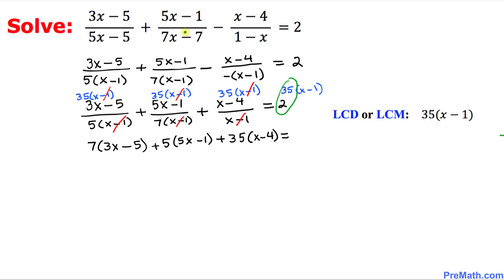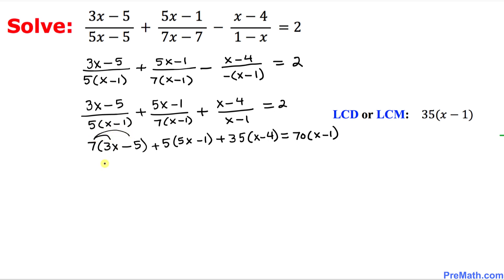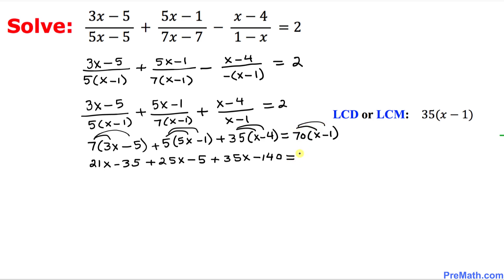On the right-hand side, multiplying 2 times 35 becomes 70, so this becomes 70 times x minus 1. Now let's distribute: 7 into 3x minus 5 gives 21x minus 35. Distributing 5 into 5x minus 1 gives plus 25x minus 5. And 35 times x minus 4 gives plus 35x minus 140. On the right, distributing gives 70x minus 70.